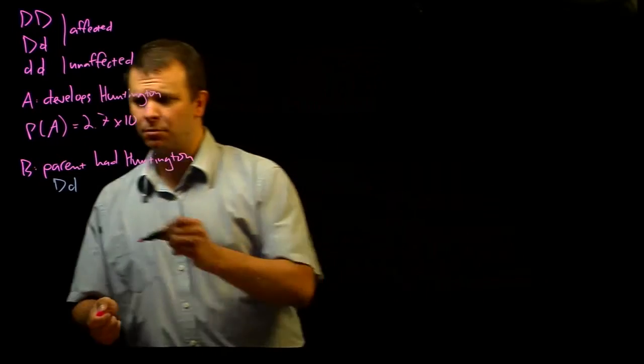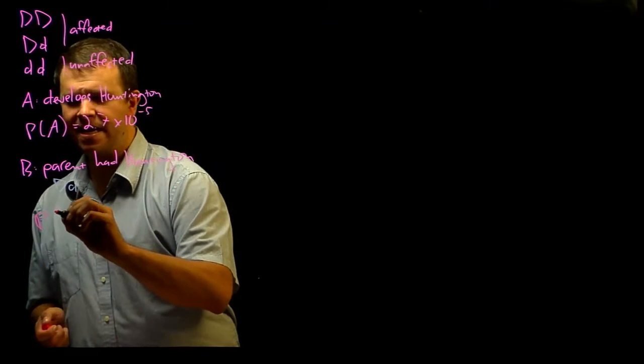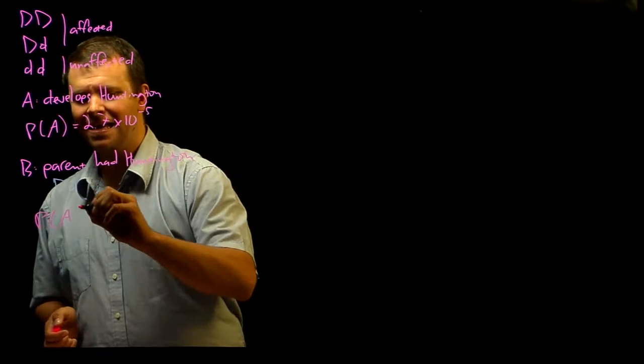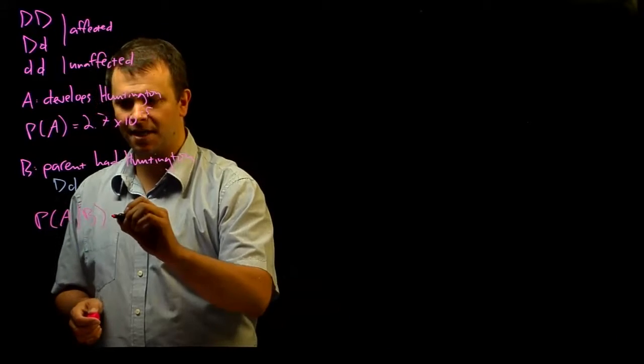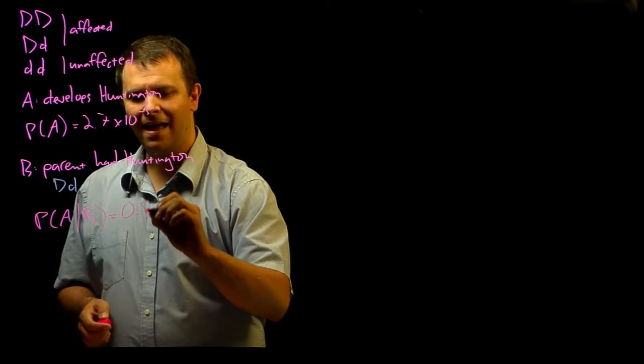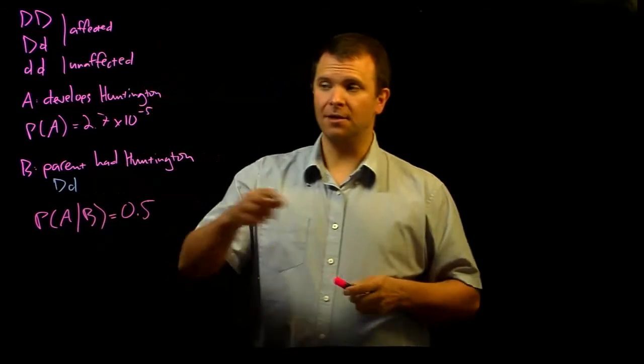And so we write this probability P of A given B. And we represent it with this horizontal bar. And that probability is 0.5.